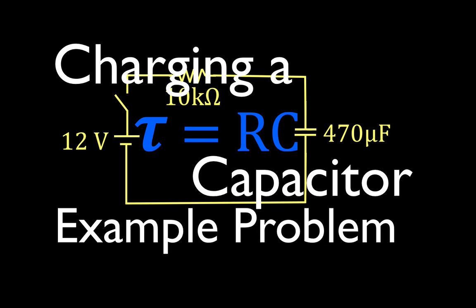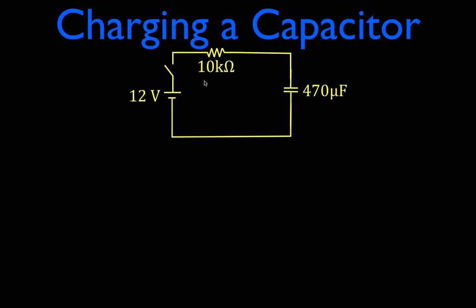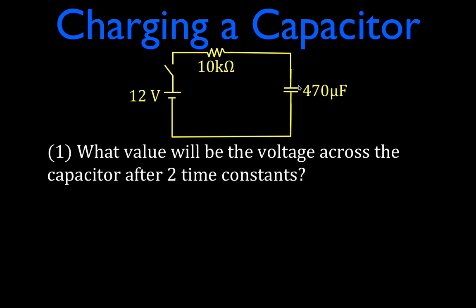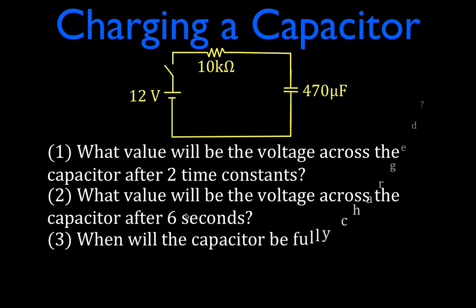In today's video I'm going to go over an example problem concerning voltage and current while charging a capacitor in a simple RC circuit. In this circuit we have a 12 volt DC source, a 10k ohm resistor, and a 470 microfarad capacitor. We're going to answer four questions: the voltage across the capacitor after two time constants, the voltage after six seconds, how long it will take for the capacitor to be fully charged, and when the current will be reduced by 25%.